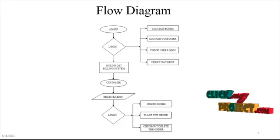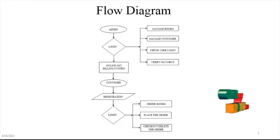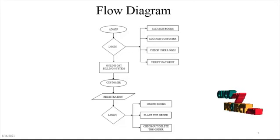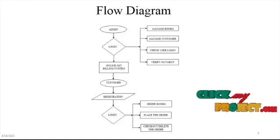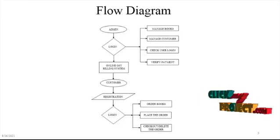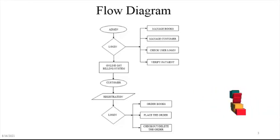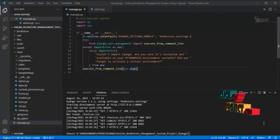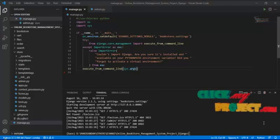The user or customer module requires users to register and log in to the website. The customer can easily search for a book by author name or book name, and can easily order the book in a few steps. The customer can place and checkout the order and make payment using PayPal or credit card transaction. The user can also write their own reviews of a book and log out of the system.